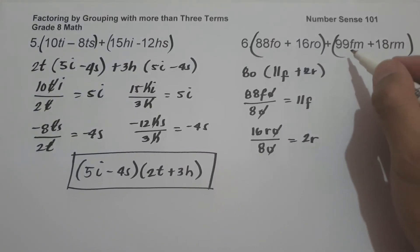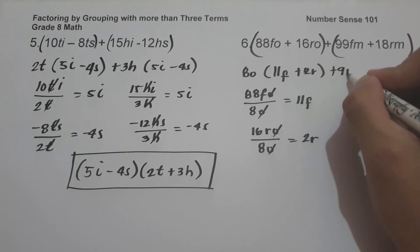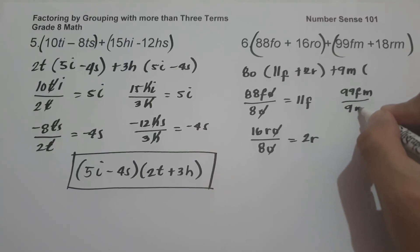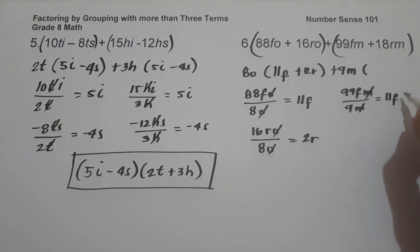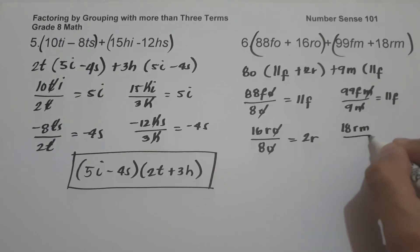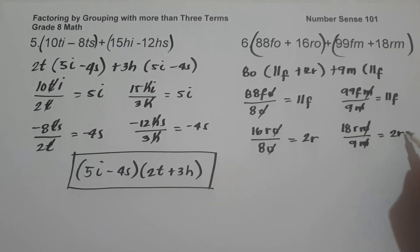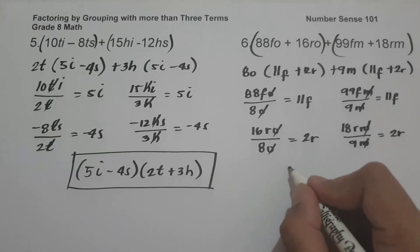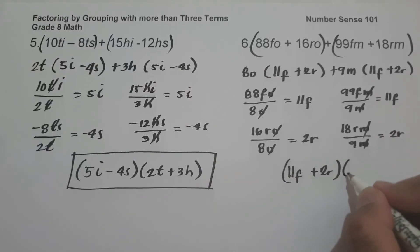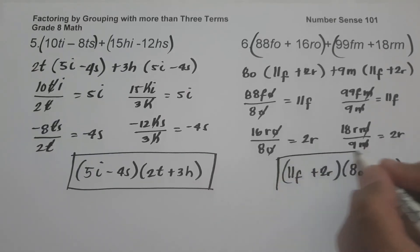The GCF of 99FM and 18RM is 9M. So 99FM divided by 9M: cancel M, giving 11F. Then 18RM divided by 9M: cancel M, 18R divided by 9 gives 2R. Therefore, the answer is (11F plus 2R) times the quantity (8O plus 9M).